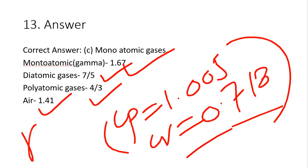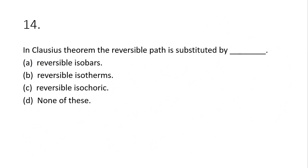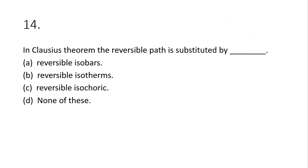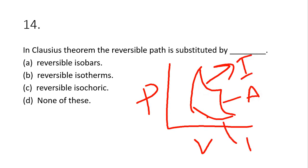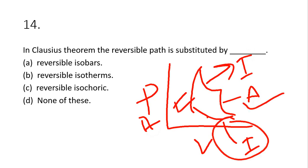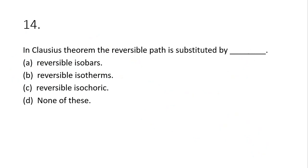Question 14: in Clausius's theorem, the reversible path is substituted by what? To understand this, consider the PV diagram of the Carnot cycle: it has reversible isothermal and reversible adiabatic processes. From Clausius's theorem, the reversible path is substituted by reversible isothermals. Option B is the correct answer.